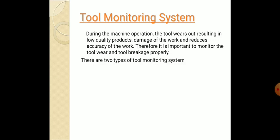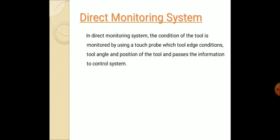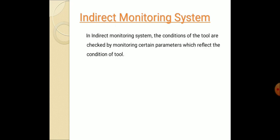There are two types of tool monitoring system. First one is direct monitoring system, second one indirect monitoring system. In direct monitoring system the condition of the tool is monitored by using a touch probe in which the probe touches to the surface to detect the edge conditions and the tool angle and the position of a tool and passes the information to the control system.